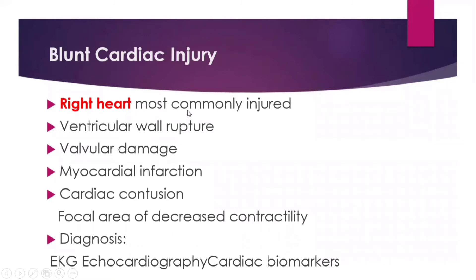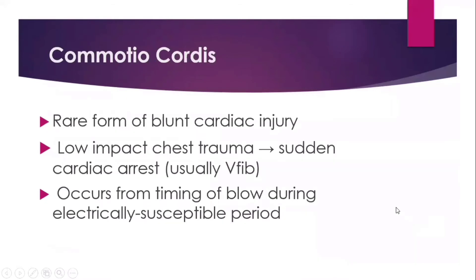In blunt cardiac injury, ventricular wall rupture may happen, along with valvular damage and myocardial infarction. Cardiac contusion is a focal area of decreased contractility. The diagnosis is made with echocardiography and cardiac biomarkers. In the next slide, we will talk about commotio cordis.